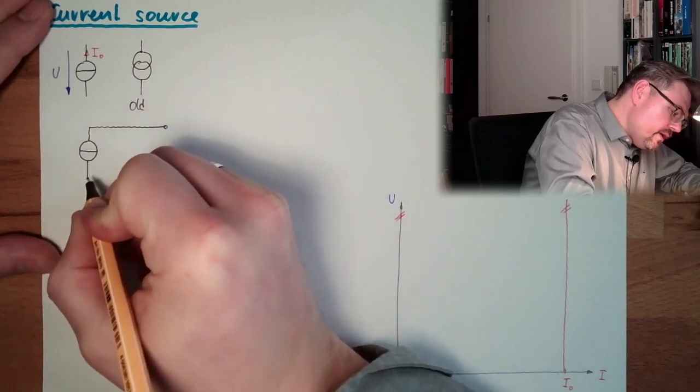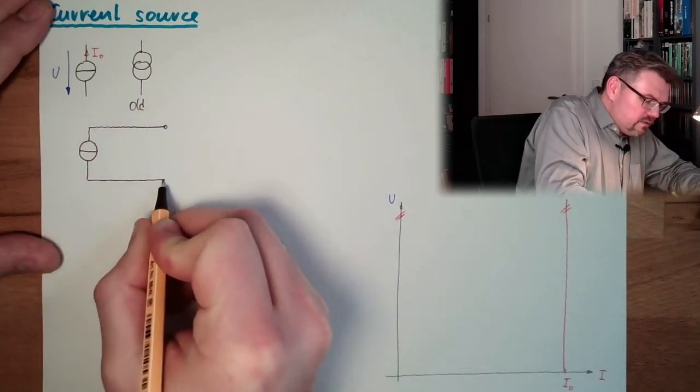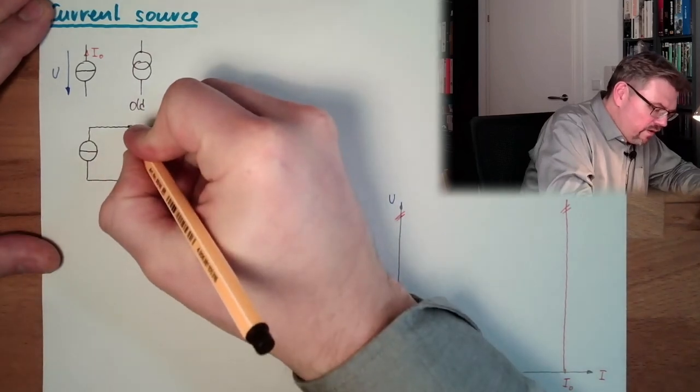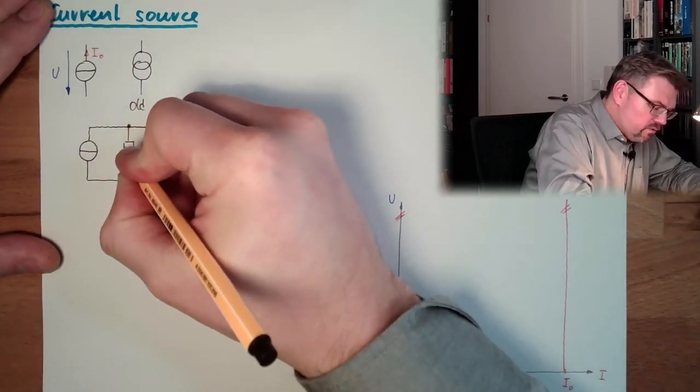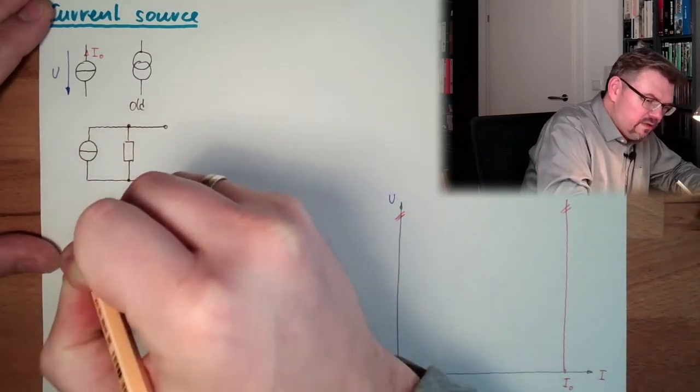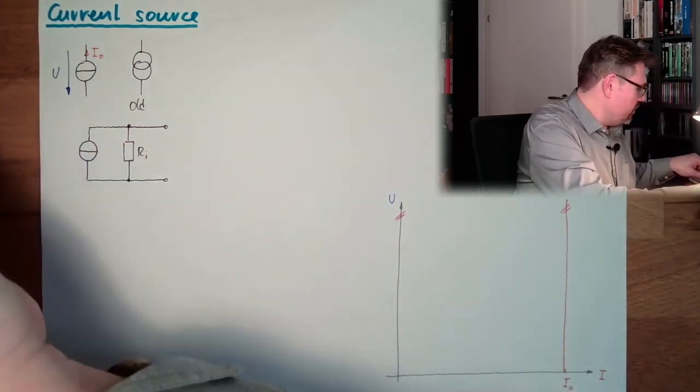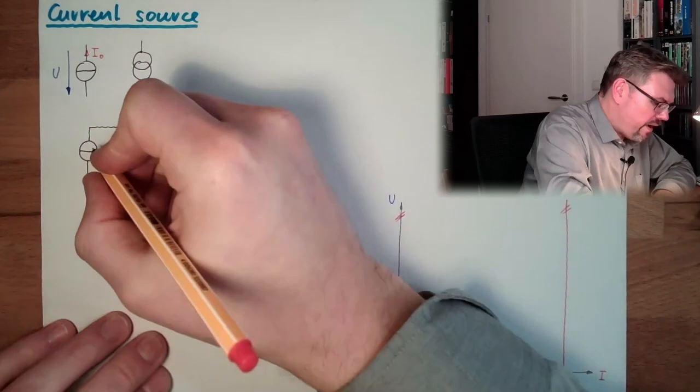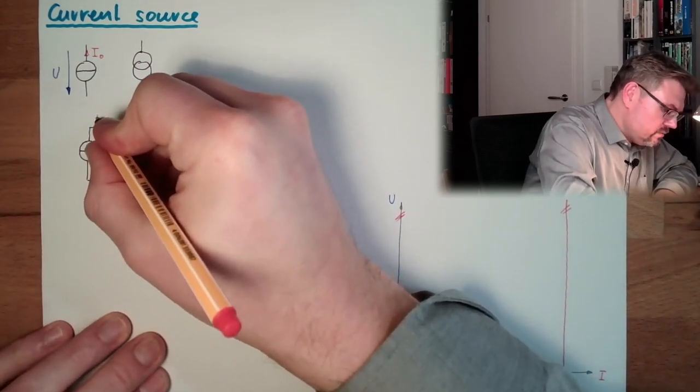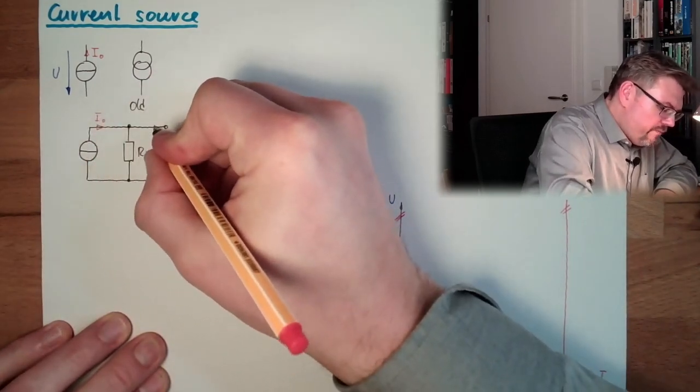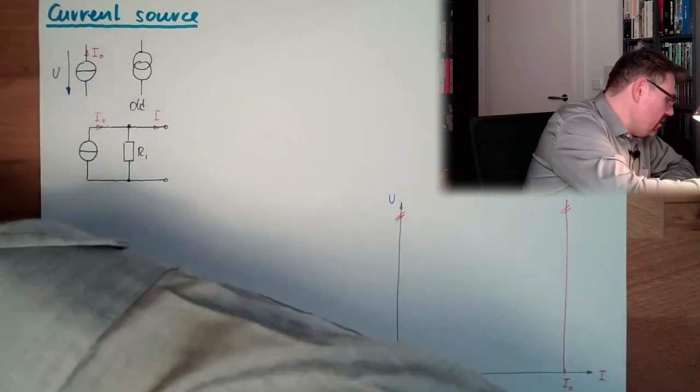This would be the ideal source, right? And now, make a real source. There's also an internal resistor. Here, Ri. So here, actually, we have our I0. Here, we have our I. Here, we have our U.